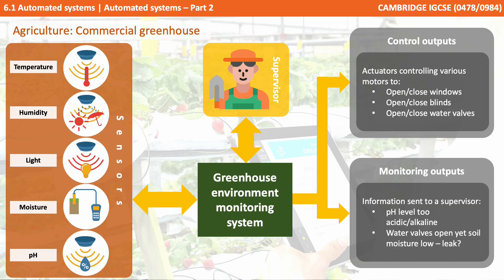The system could also detect, for example, that a water valve is open yet the soil moisture is low, suggesting the possibility of a leak and advising a supervisor to attend. Or it could take automatic control outputs, involving actuators to control various motors — opening and closing greenhouse windows if it's too hot, opening and closing blinds, or opening and closing water valves and sprinkler systems.